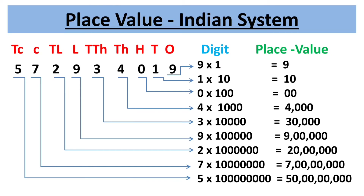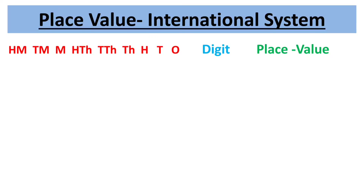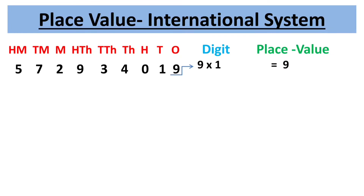Next is the international place value system. Here 9 places are grouped into 3 periods: ones, thousands, and millions. Starting from the right, the first period is ones, consisting of 3 places: ones, tens, and hundreds. Place value of 9 is 9 × 1 = 9. Place value of 1 is 1 × 10 = 10.